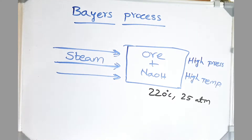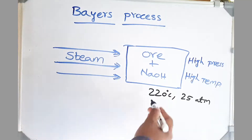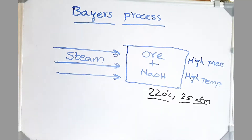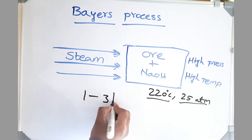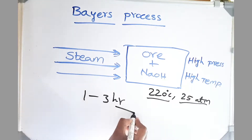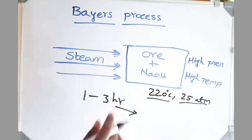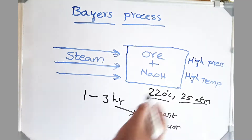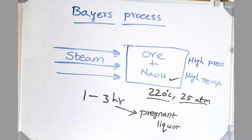We go up to temperatures of 220 degrees centigrade and 25 atmospheres during this process. This process is carried out for 1 to 3 hours. After that, whatever we have, we call that pregnant liquor. During this process, our NaOH is dissolving the alumina.